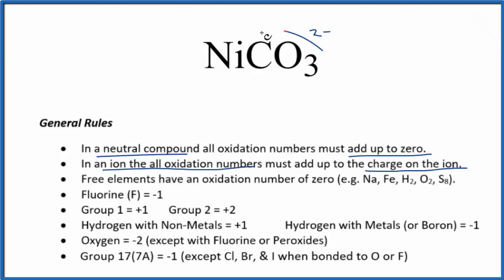So we have our carbonate ion. The whole thing is minus 2. All these oxidation numbers add up to minus 2. The nickel has to add up to plus 2 for this all to add up to zero, be a neutral compound.